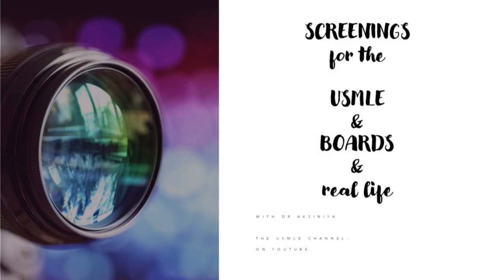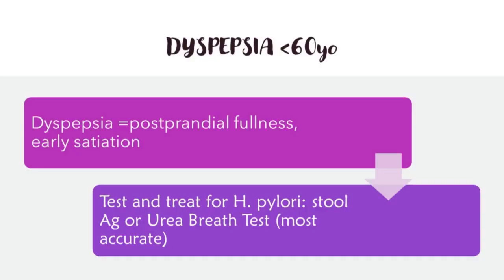For example, on day 2 of the USMLE Step 3 exam, predominantly the questions are on screening guidelines, so I would highly suggest taking the time to understand and memorize them. We start with dyspepsia. In less than 60-year-old patients, dyspepsia is defined as postprandial fullness and early satiety. If a patient with dyspepsia presents and they are less than 60 years of age, you must test and treat them for H. pylori with stool antigen or urea breath test.